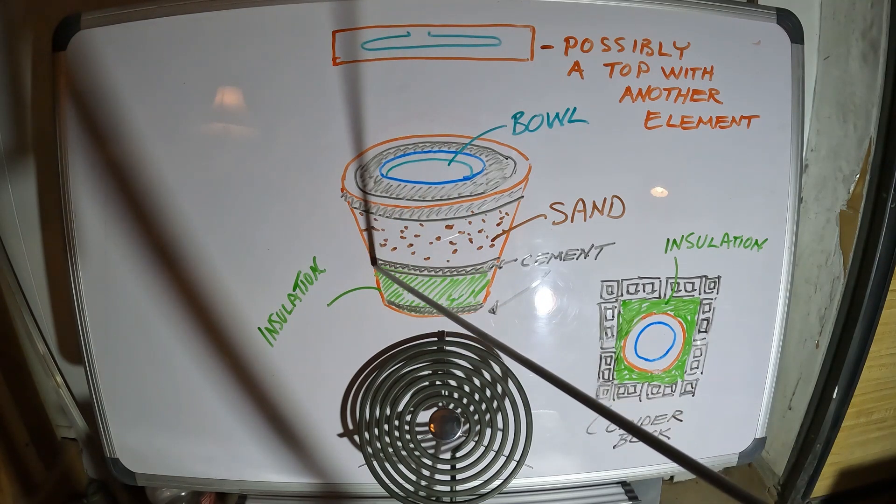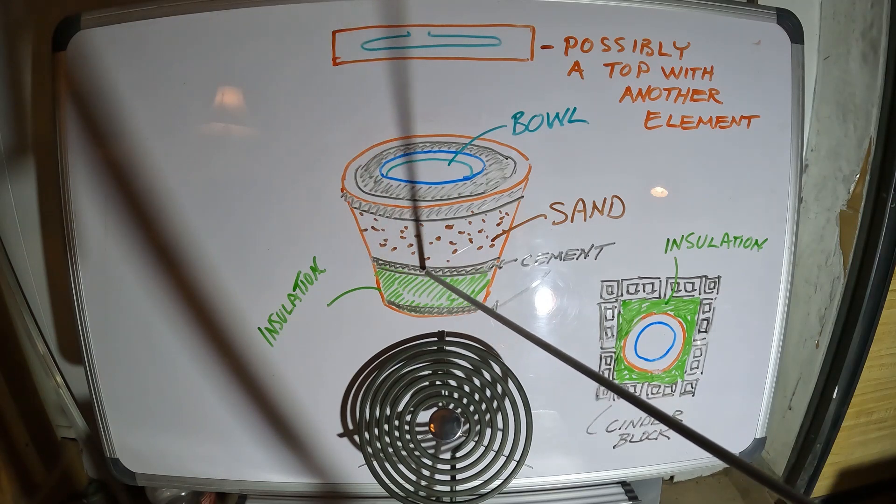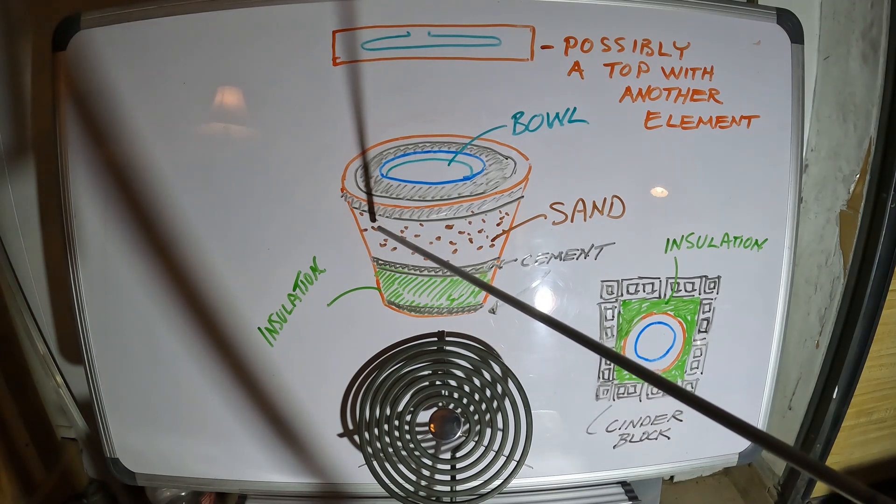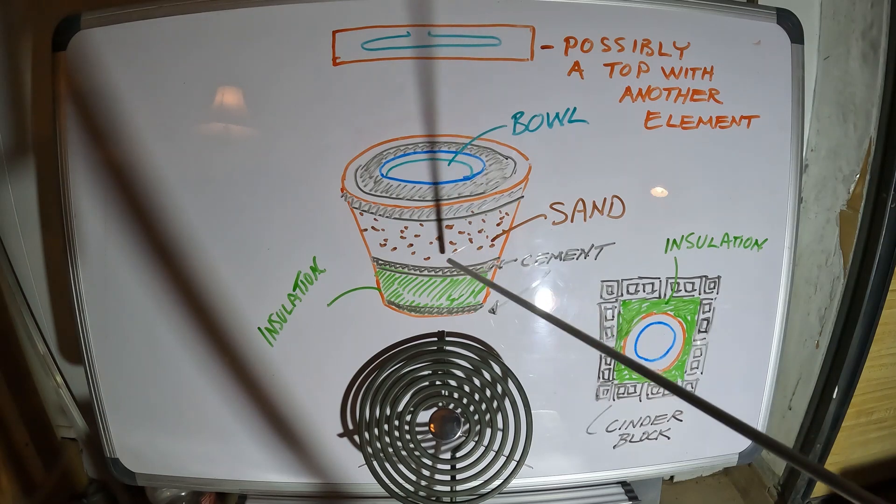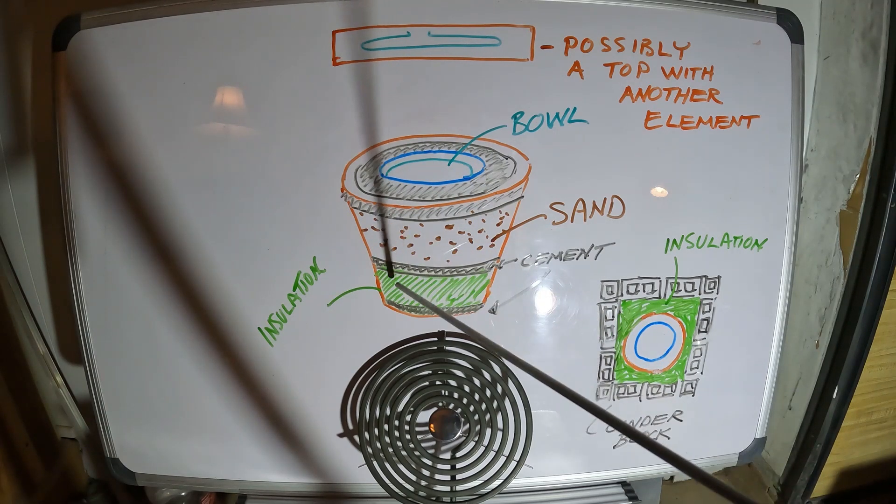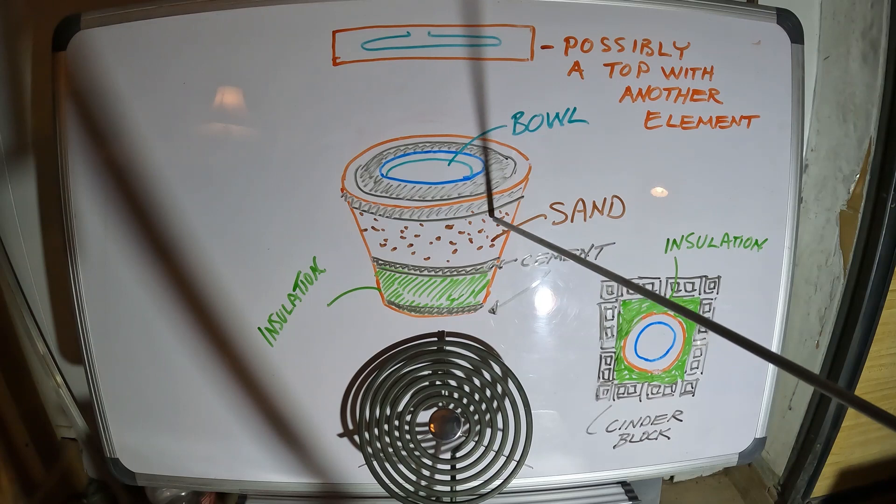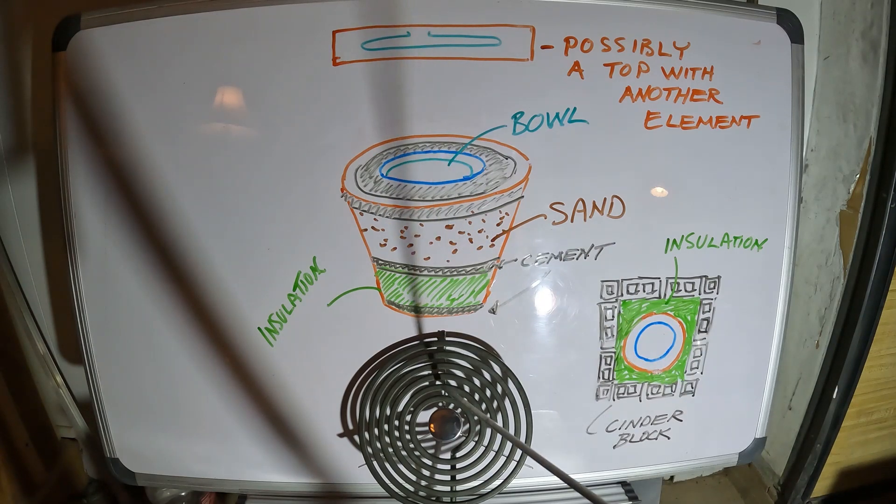The sand will be underneath that, then I'll probably have another cement float. First off, cement on the bottom insulation, then another cement strip here, maybe an inch thick, and then the sand just to kind of keep the sand separate from the insulation and the element.